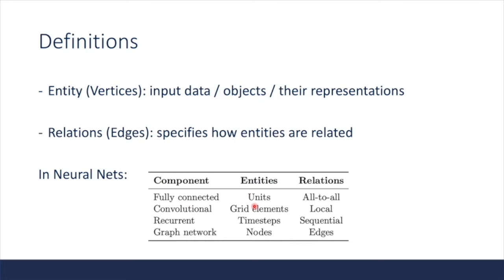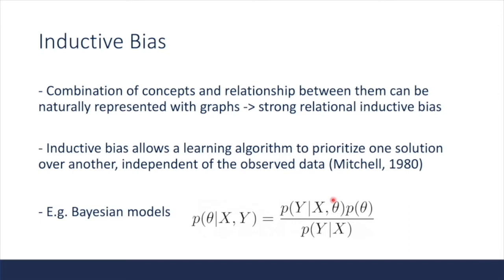Let's define entities as vertices in a graph. Vertices denote input data like objects or their representations. Relations are defined as edges, and the edges specify how entities are related. We can also view different building blocks in neural networks as a graph. For example, for fully connected layers, we can consider each entity as each unit in the input and output vectors. Because each unit in the output and input vectors are all densely connected, this is an all-to-all relation. Graphs have strong relational inductive bias.